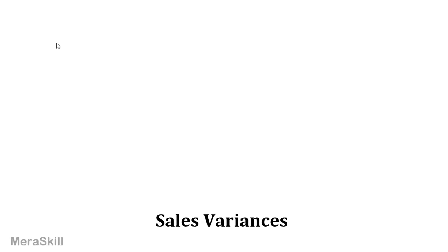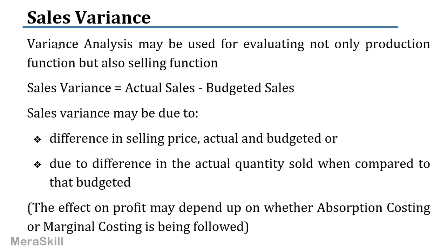Now let's do the Sales Variance Systems. Variance analysis may be used for evaluating not only production but also the selling function. Actual sales minus budgeted sales gives you the sales variance, and the difference could be because of the selling price or because of the difference in actual quantity sold compared to budget. So again, there is quantity and price.